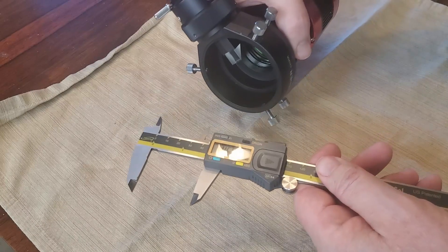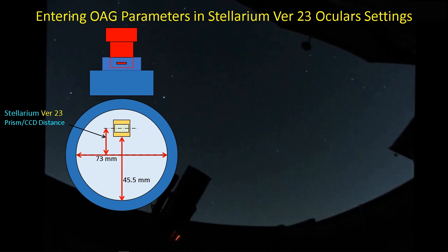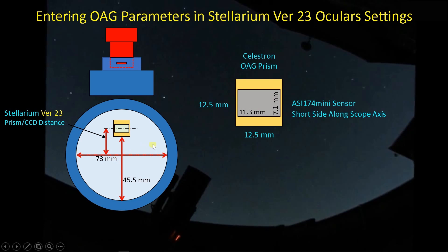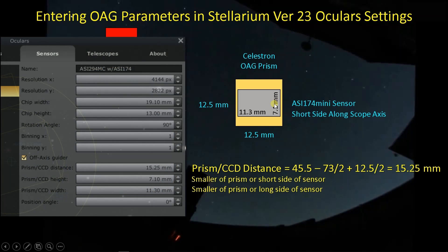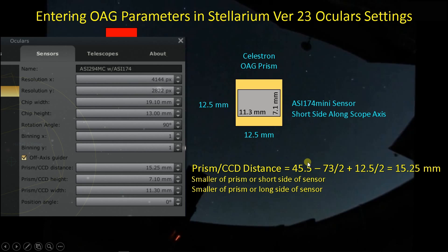Now we go back to Stellarium, do some calculations, and enter the numbers in. We came up with 73 millimeters across the diameter and about 45.5 millimeters from the bottom of the opening up to the bottom of the prism. That still doesn't directly give us the prism CCD distance, but it's easy with some simple math. For this Celestron off-axis guider, the prism is 12.5 millimeters by 12.5 millimeters. We have the measurement to the bottom edge of the prism, and we just need to add half of 12.5 to get to the center line. So: 45.5 minus 73.2 divided by 2 (the radius of the opening) gives the distance from the center of the optical axis up to the bottom edge of the prism, and then we add 12.5 divided by 2 to reach the center line.